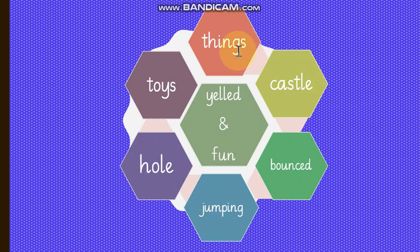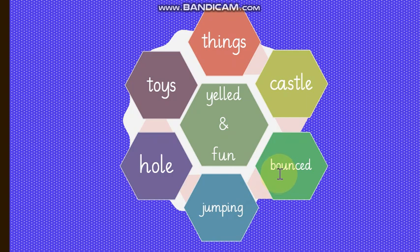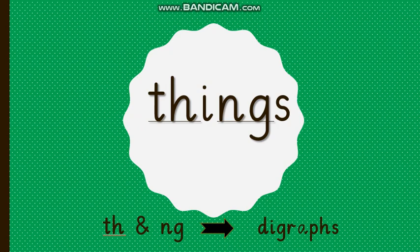The first word is 'things,' then 'toys,' 'hole,' 'jumping,' 'bounced,' 'castle,' 'yelled,' and 'fun.' Let's start our lesson. I'm going to tell you how to read these words with sound. The first word you are watching on your screen is 'things.'